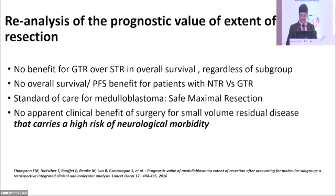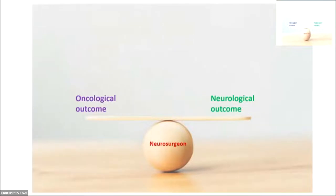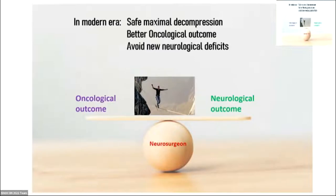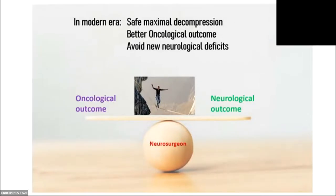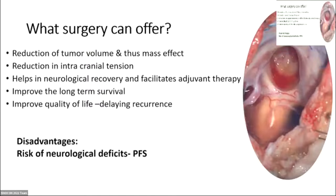As surgeons, we have to balance oncological outcome against neurological outcome — it's a fine line. The best approach should be safe maximal resection, because these tumors go for adjuvant therapy after surgery. A neurological deterioration or moribund status delays adjuvant therapy and worsens overall outcome. There is a very fine balance we should always keep in mind when treating young children with medulloblastomas and other difficult embryonal tumors.